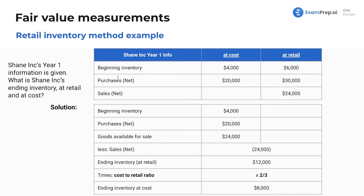We were given beginning inventory, purchases, and sales. We're kind of slowly going to be doing a base formula. We've got our beginning inventory — that's B — and purchases — that's A. We're using the base formula B and A. E is what we're trying to find.